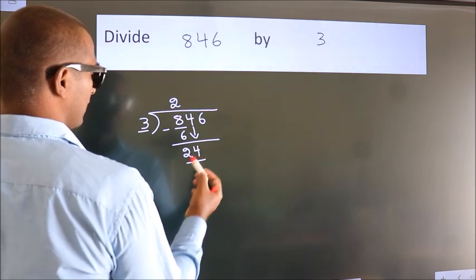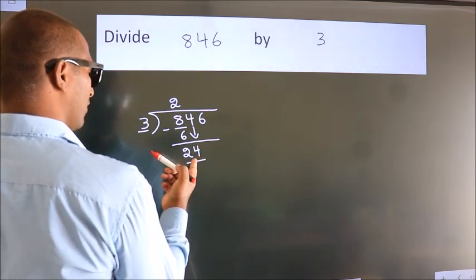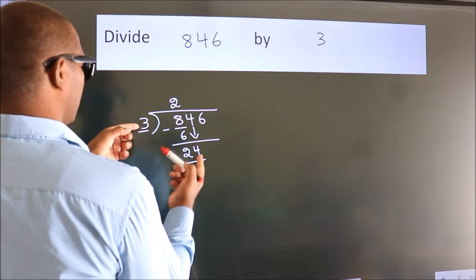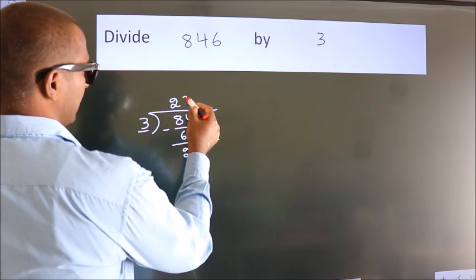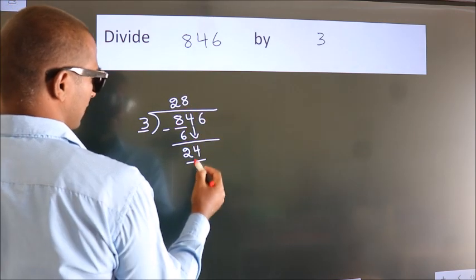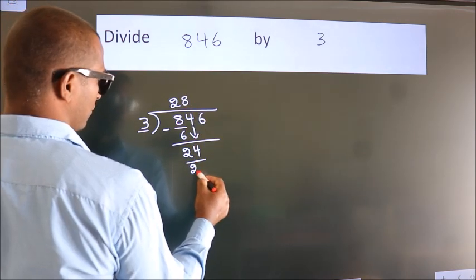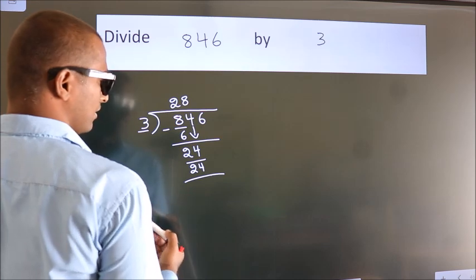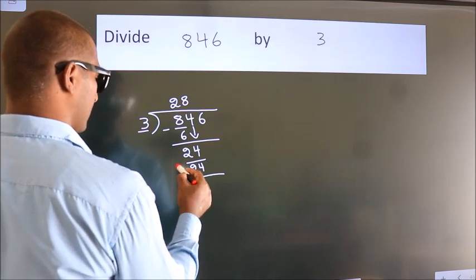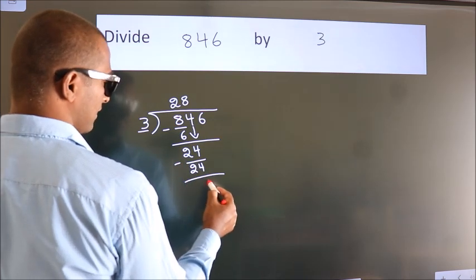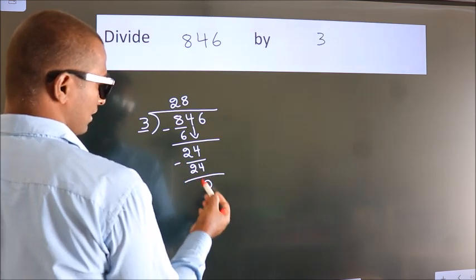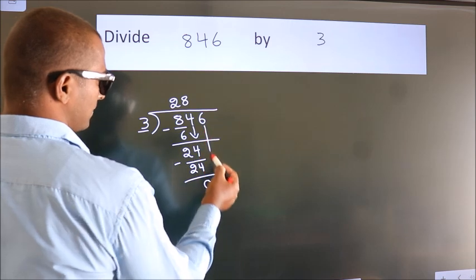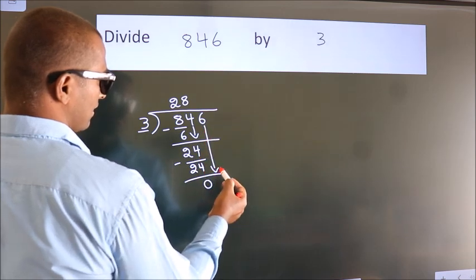So we have 24. When do we get 24 in the 3 times table? 3 eights are 24. Now we subtract and we get 0. After this, bring down the beside number.